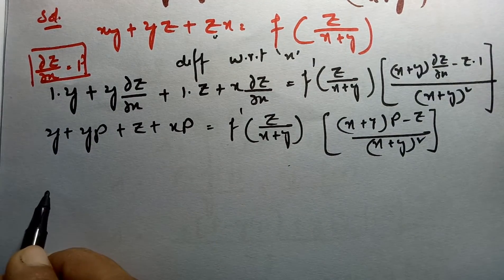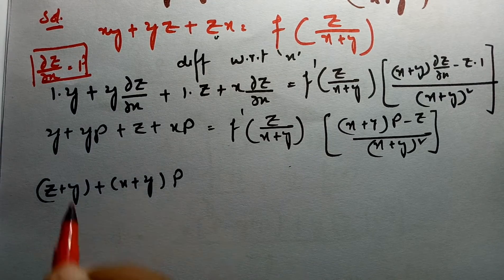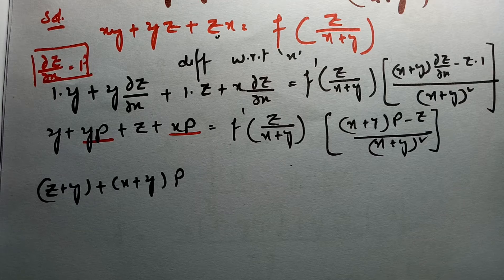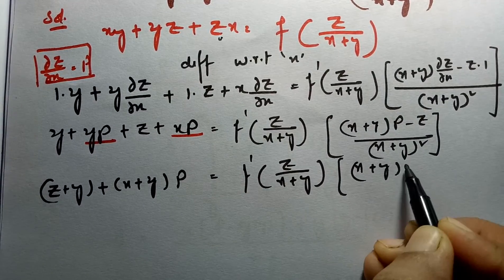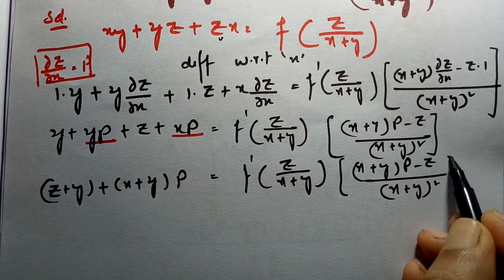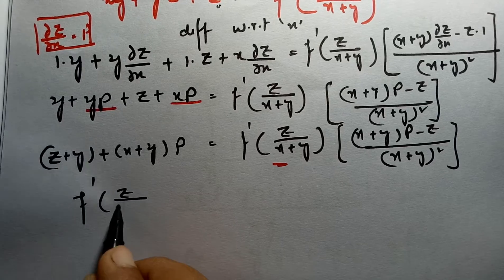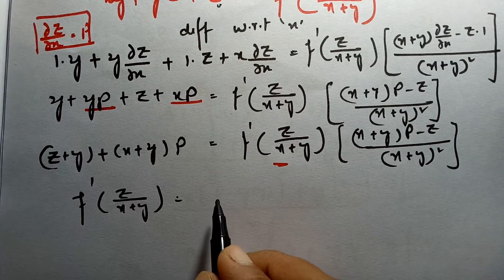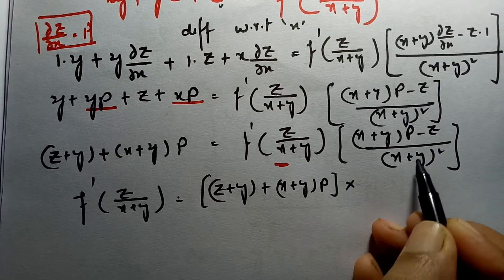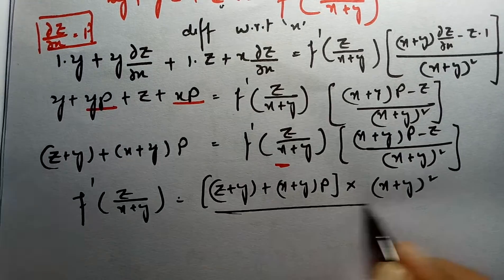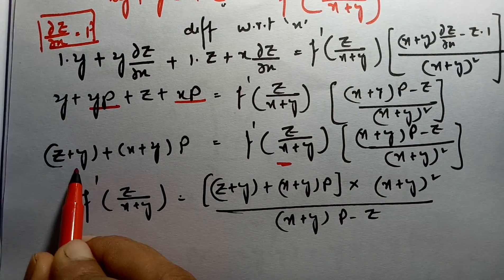Taking p as common from the left side terms, (z + y) + (x + y)p = f'(z/(x+y))·[(x+y)p − z]/(x+y)². Rearranging to isolate f'(z/(x+y)): f'(z/(x+y)) = [(z + y) + (x + y)p]·(x+y)² / [(x+y)p − z]. So the f' value after differentiating with respect to x is ready. I can write this as equation 2.